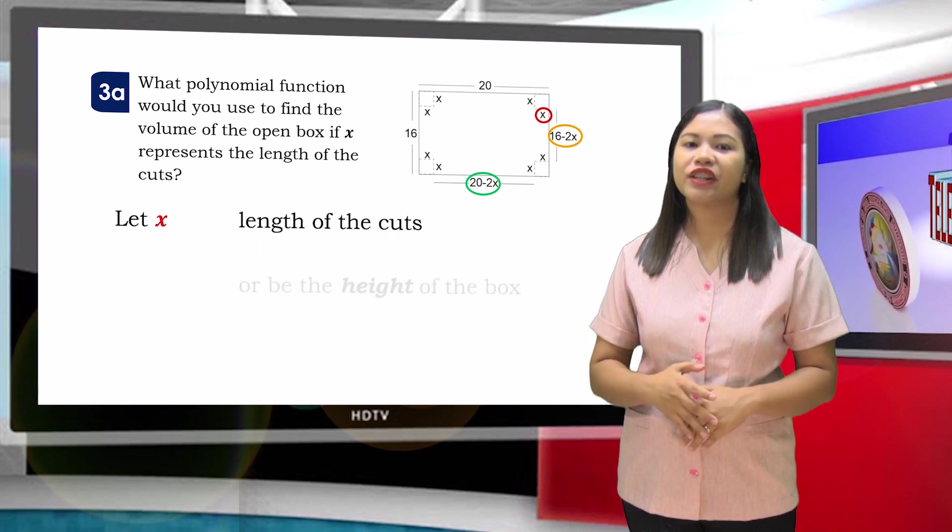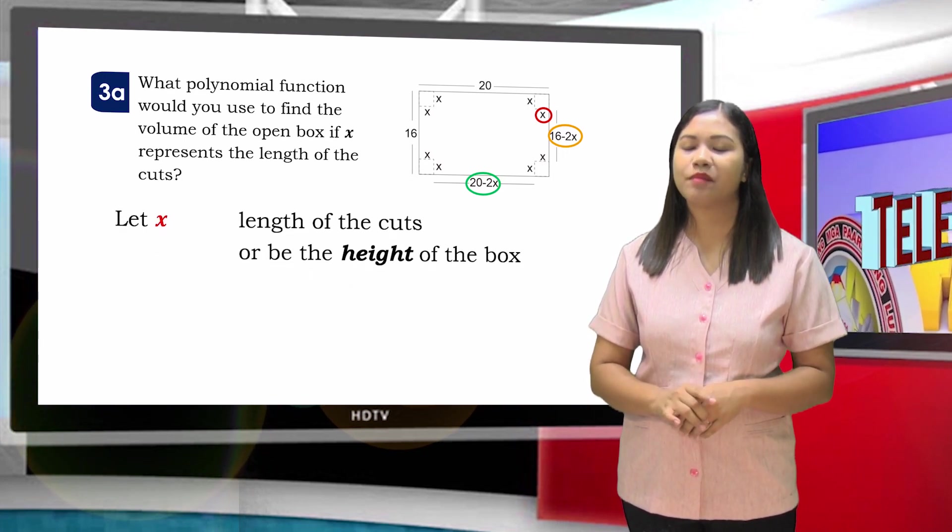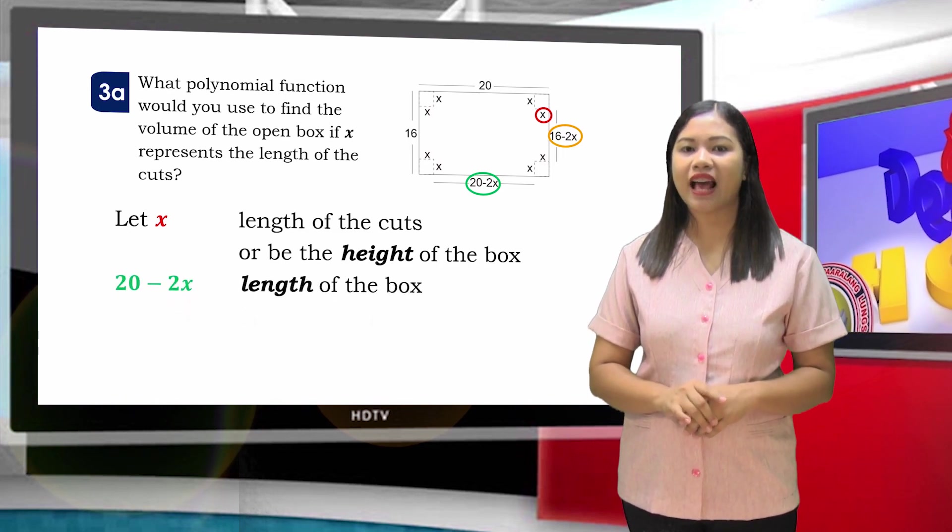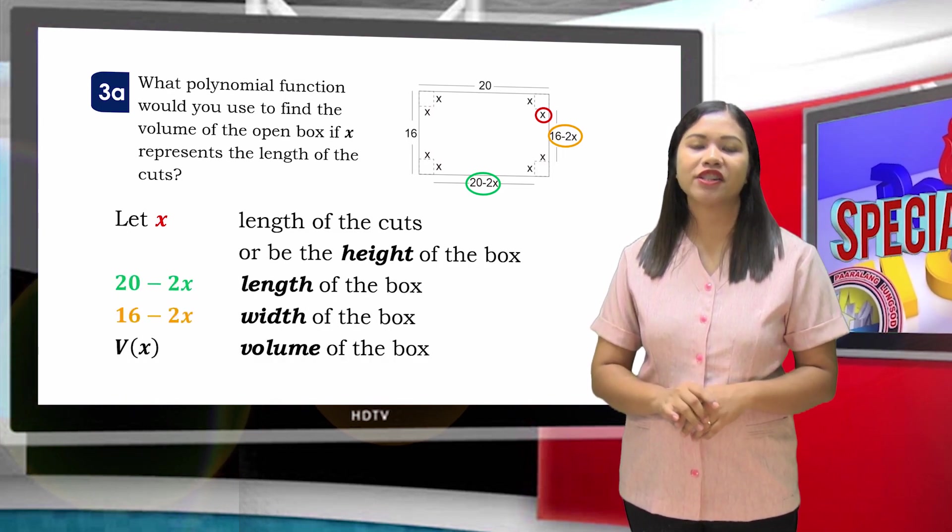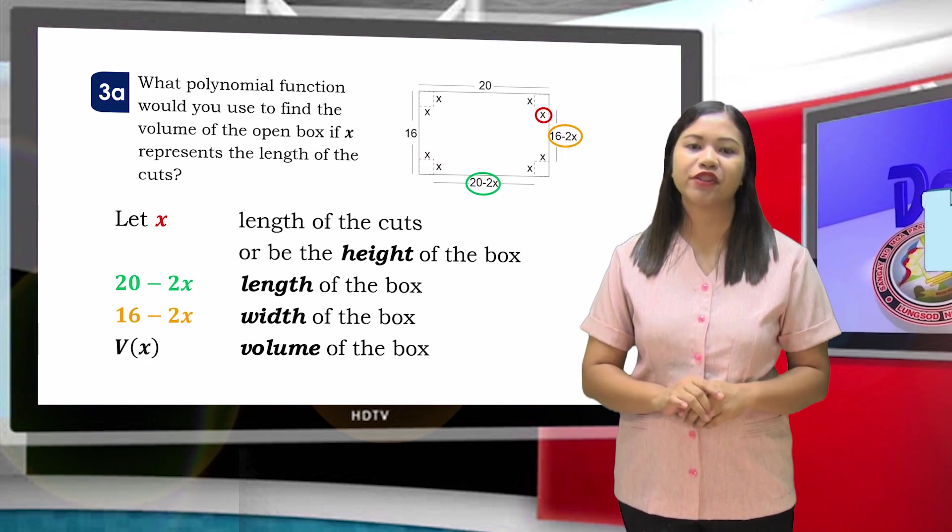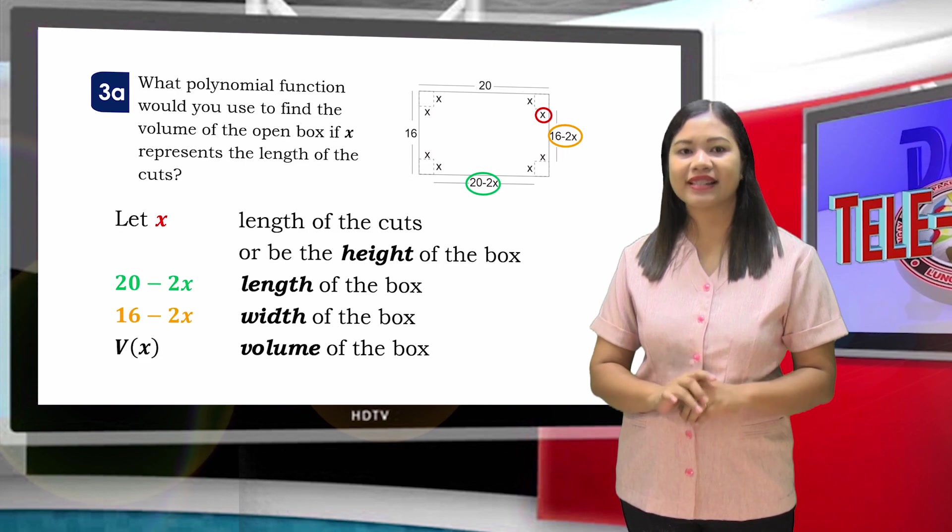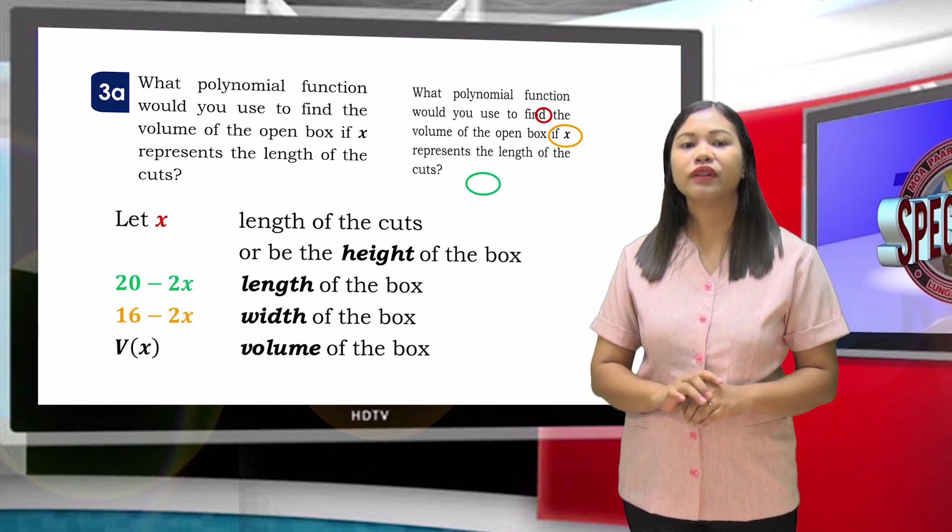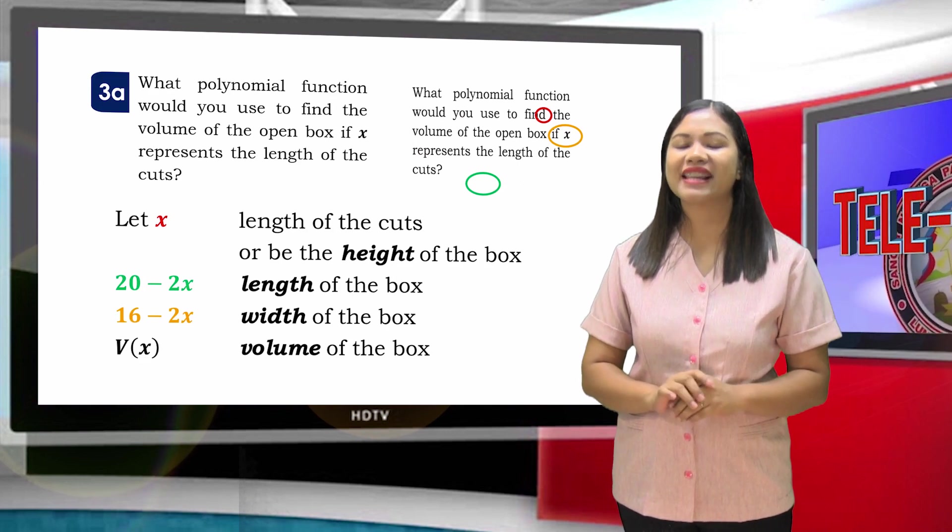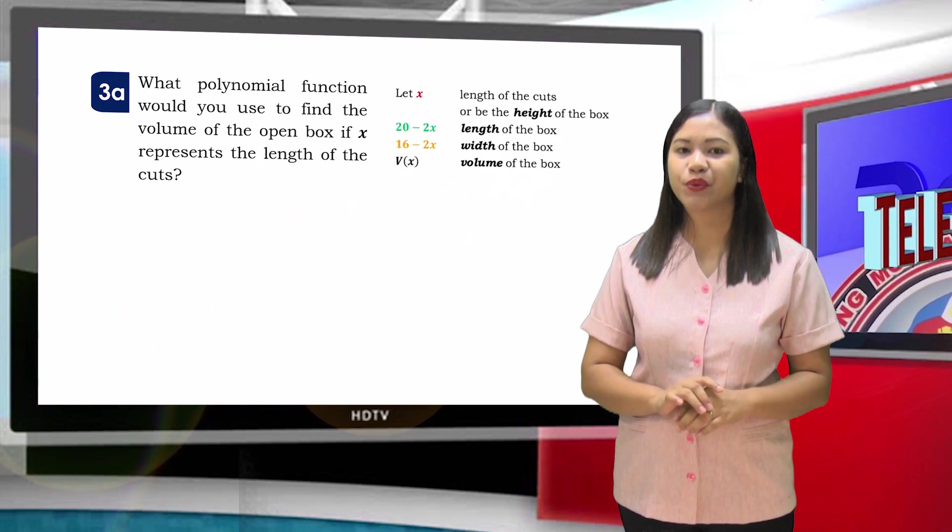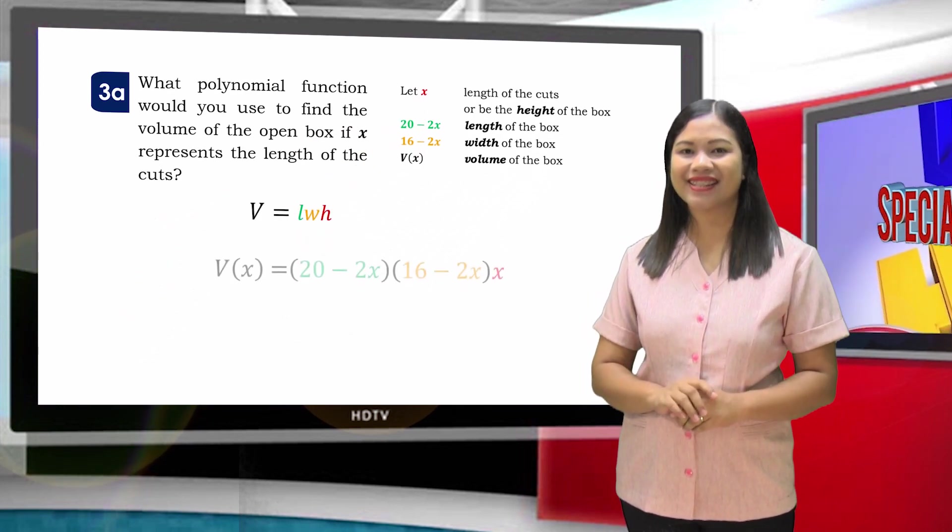Let us now answer the first question. What polynomial function would you use to find the volume of the open box if X represents the length of the cuts? The working equation is V = L × W × H. Substituting the given data, we have V(X) = (20 - 2X)(16 - 2X)(X). We can rearrange this function. So the volume of the open box is V(X) = X(20 - 2X)(16 - 2X).